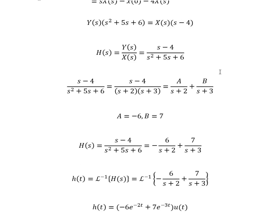So my transfer function H(s) is equal to Y(s) divided by X(s). And when I do some operations on my equation up here, I'm going to get that H(s) equals s minus 4 divided by s squared plus 5s plus 6.